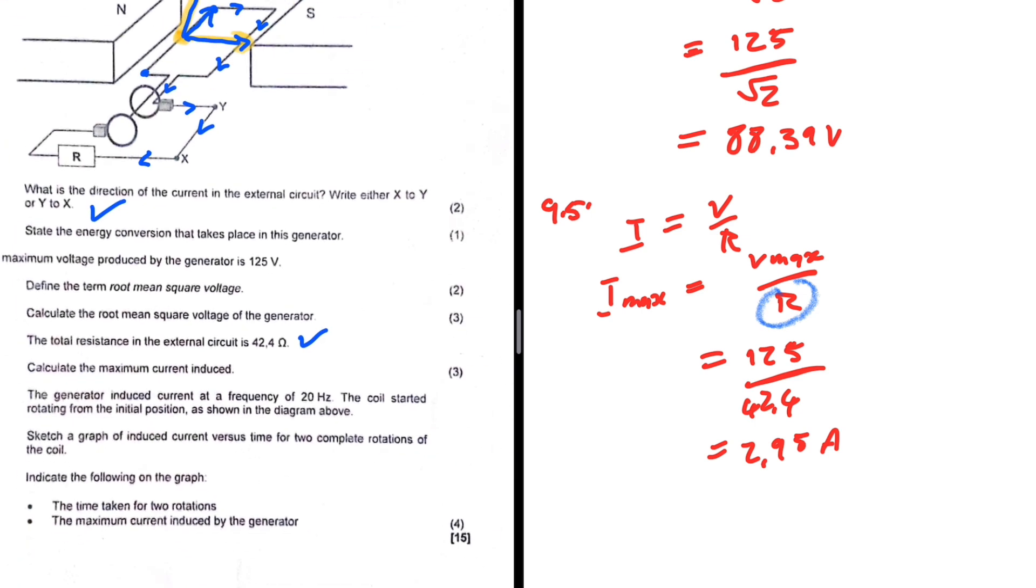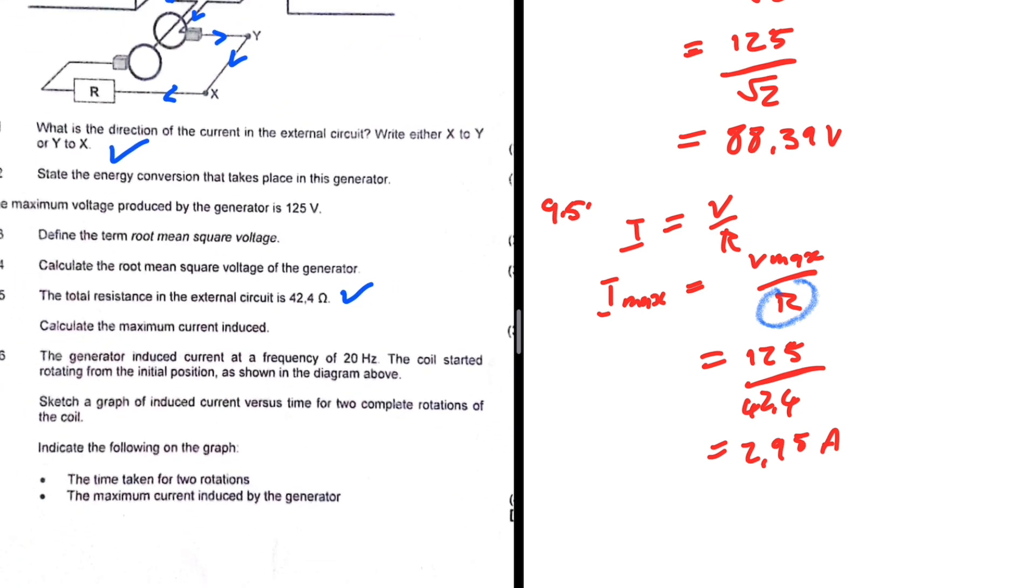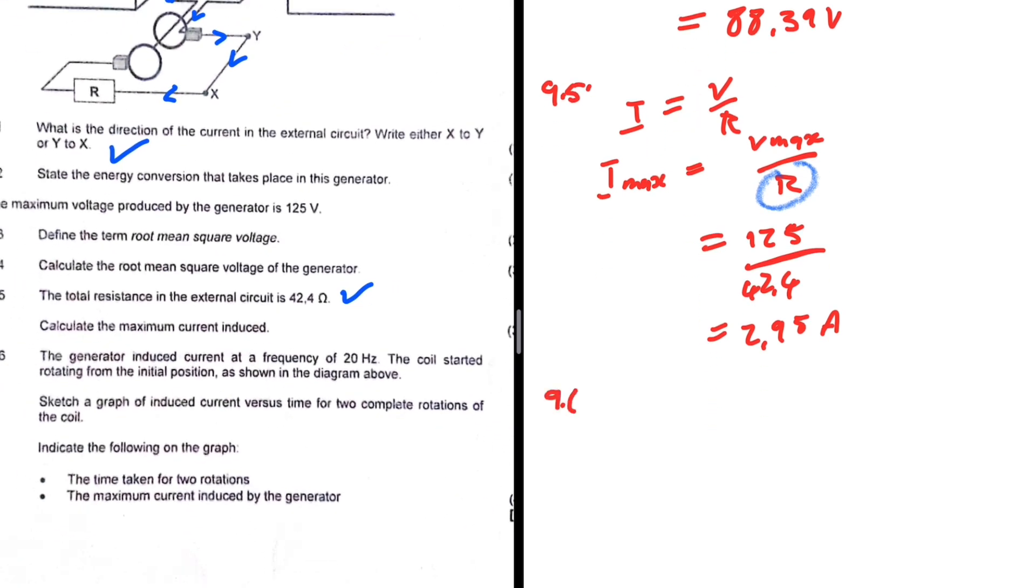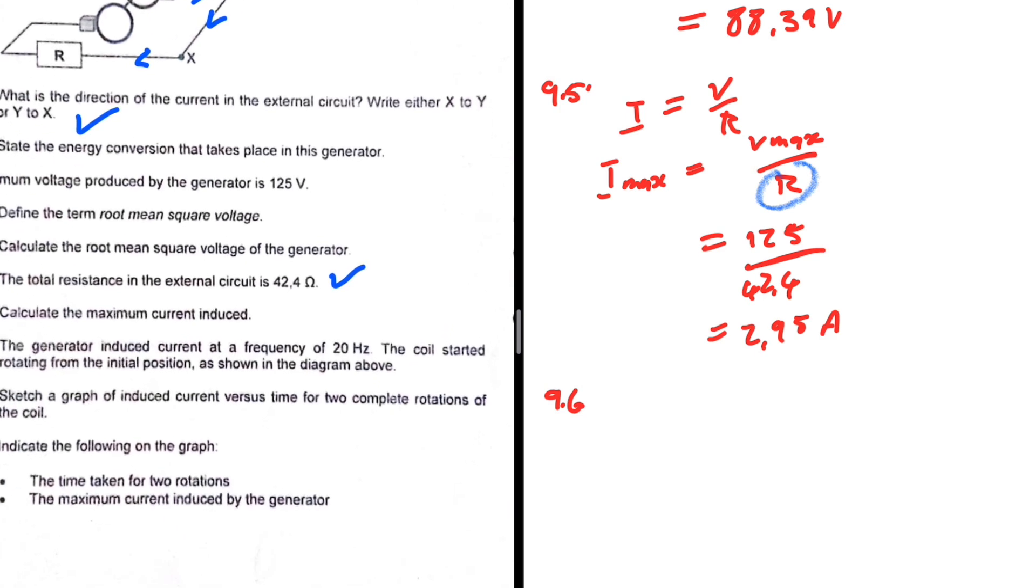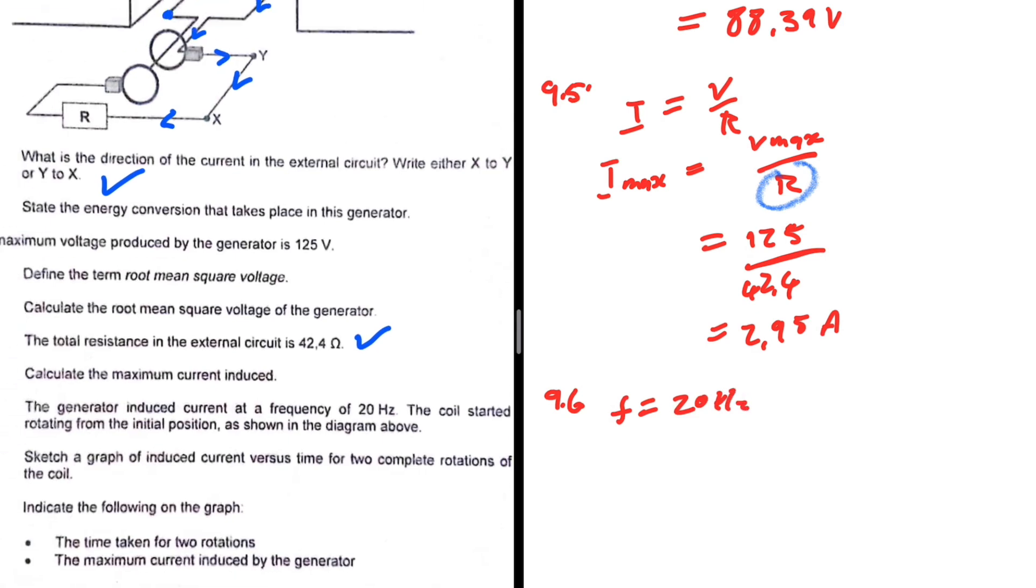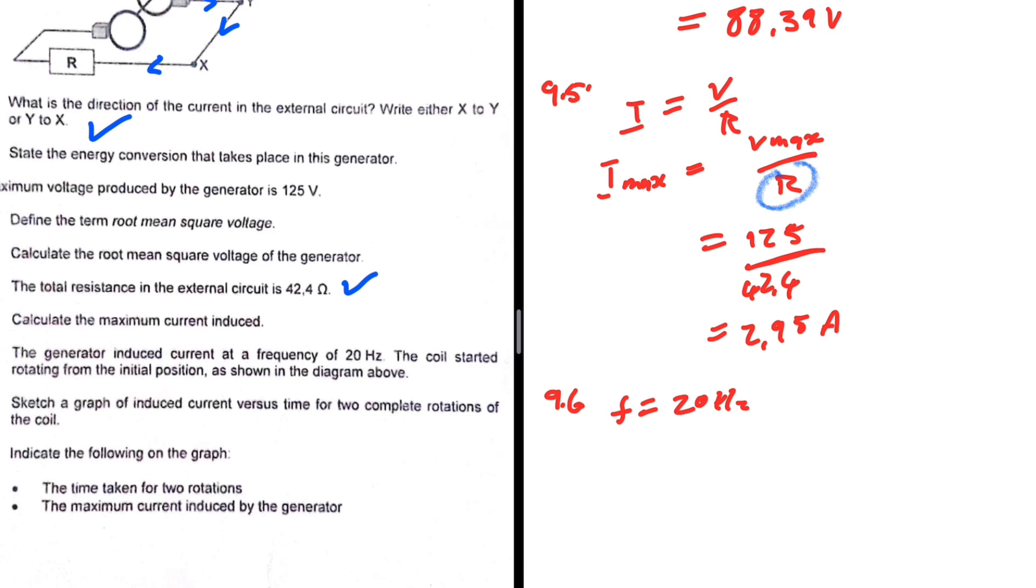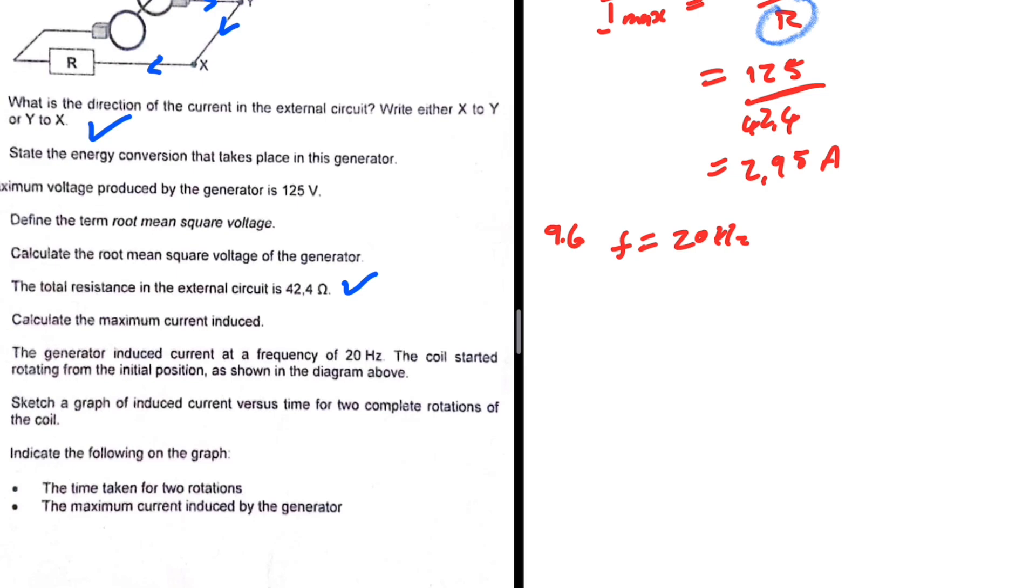9.6, the generator induced current at a frequency of 20 hertz, so we have f equals 20 hertz. The coil started rotating from the initial position as shown in the diagram. Sketch a graph of induced current versus time for two complete rotations of the coil.